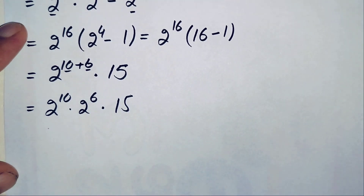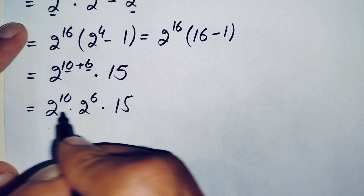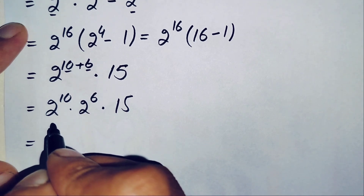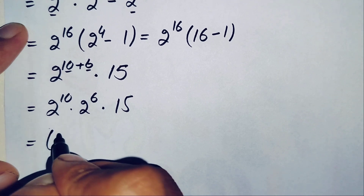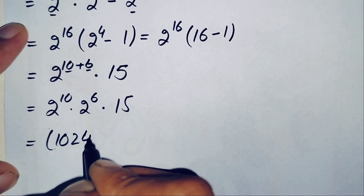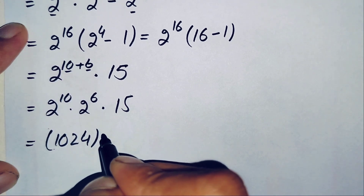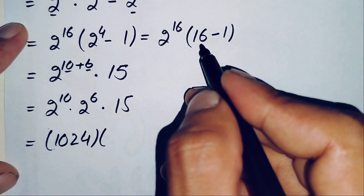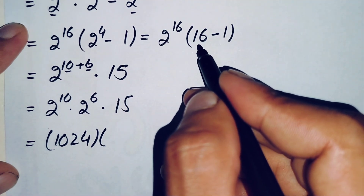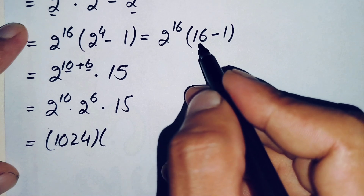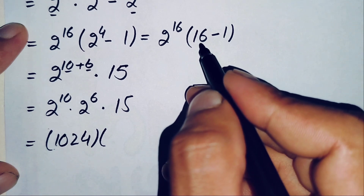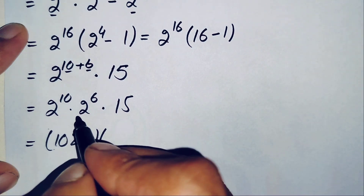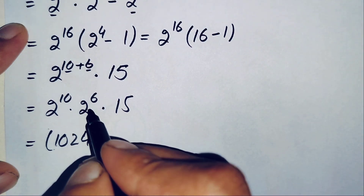First we convert the exponential numbers to their values. 2 raised to power 10 is the well-known value 1024. For 2 raised to power 6: since 2 raised to power 4 is 16, we multiply by 2 two more times — 16 times 2 is 32, and 32 times 2 is 64. So 2 raised to power 6 equals 64.